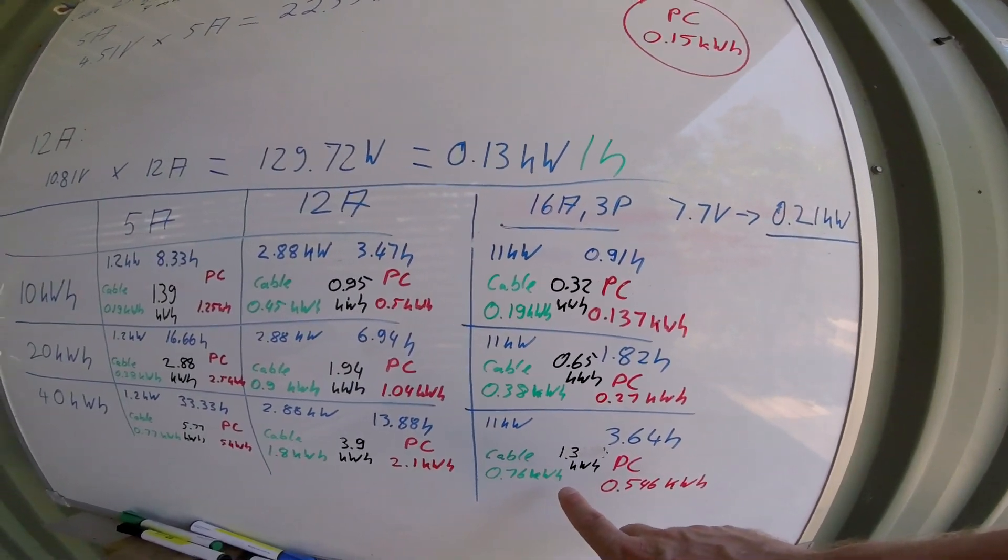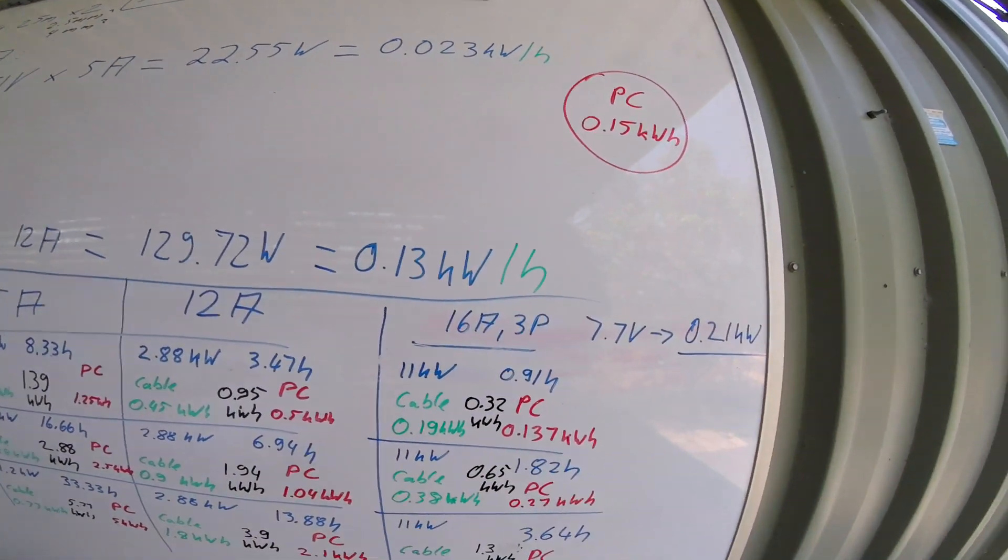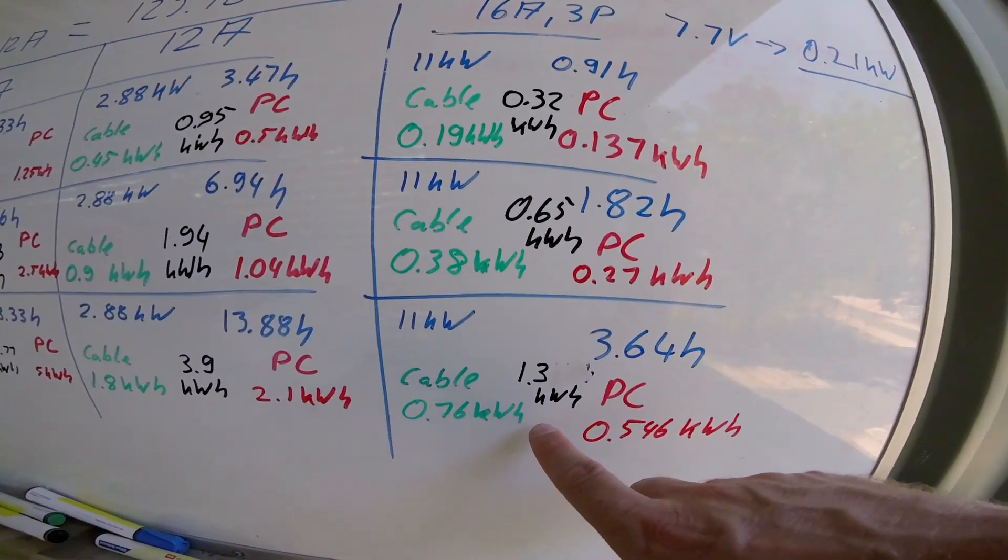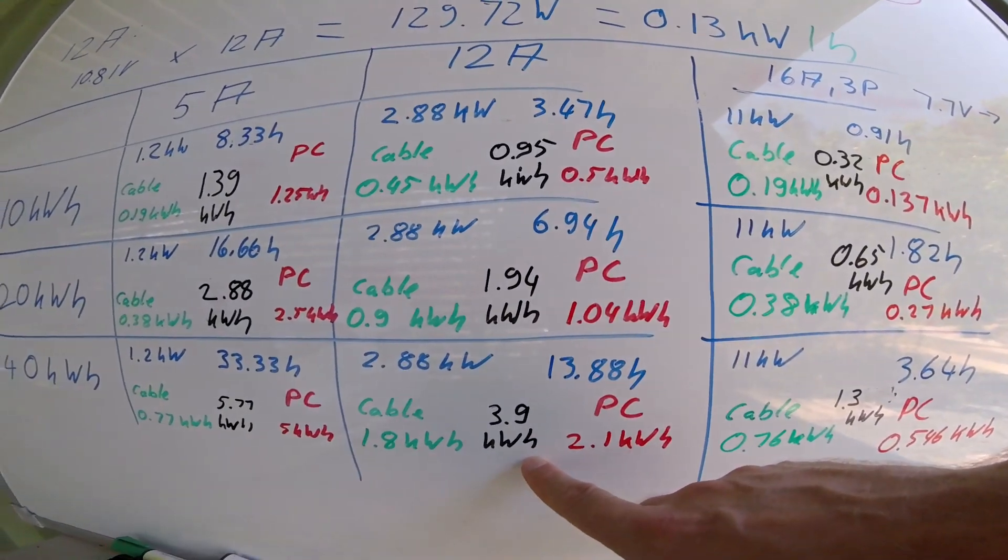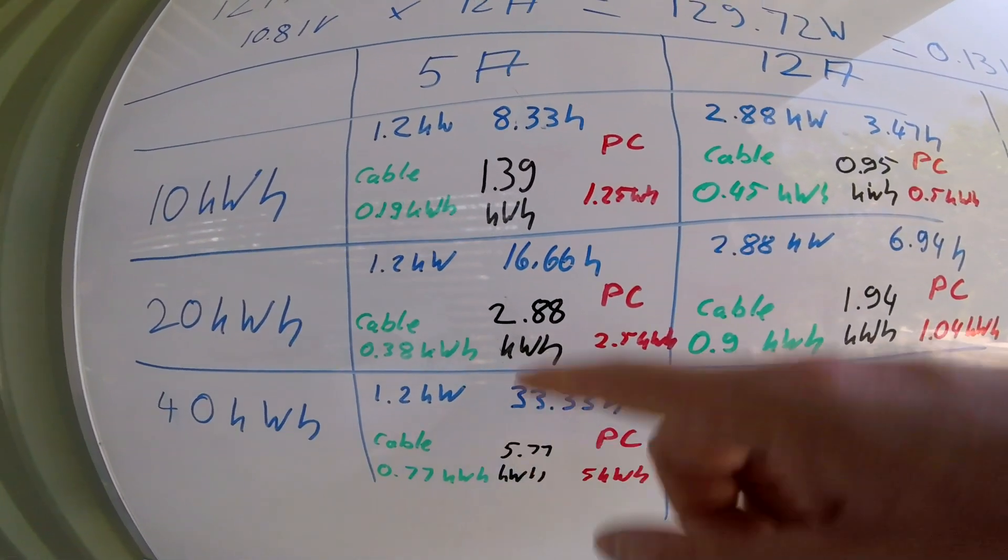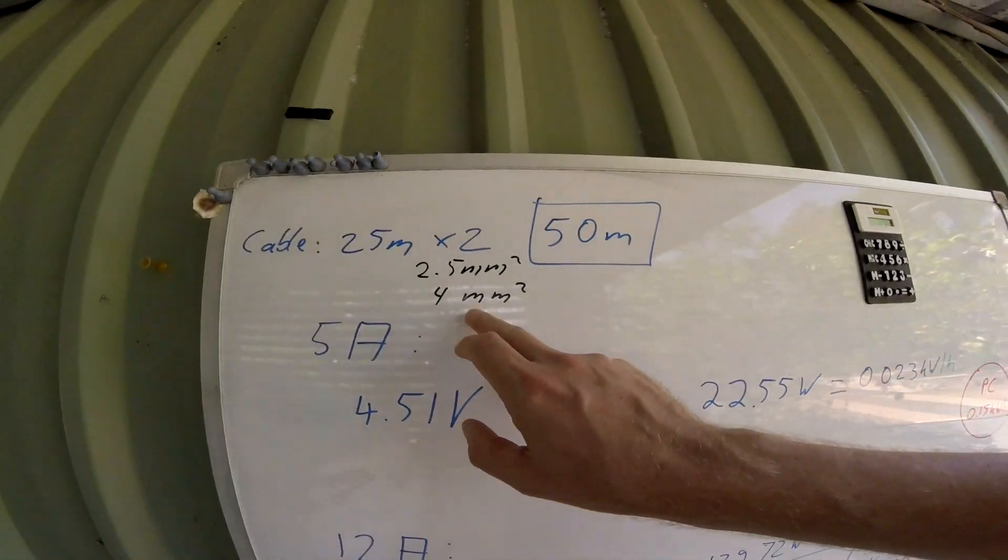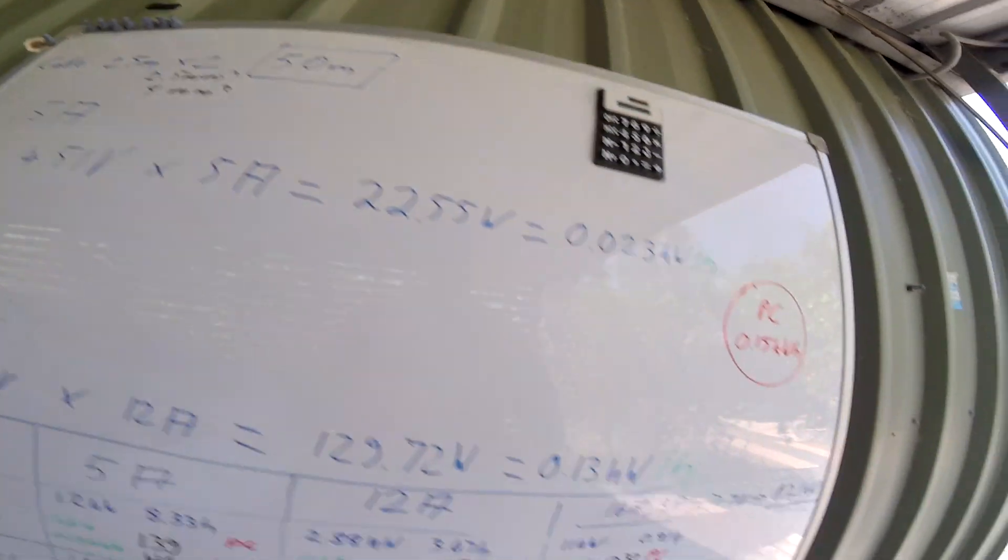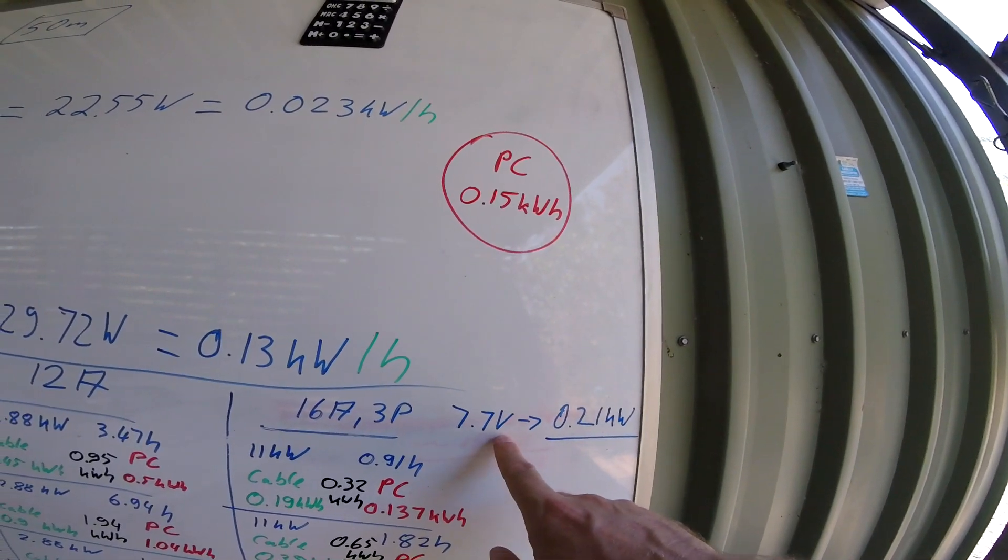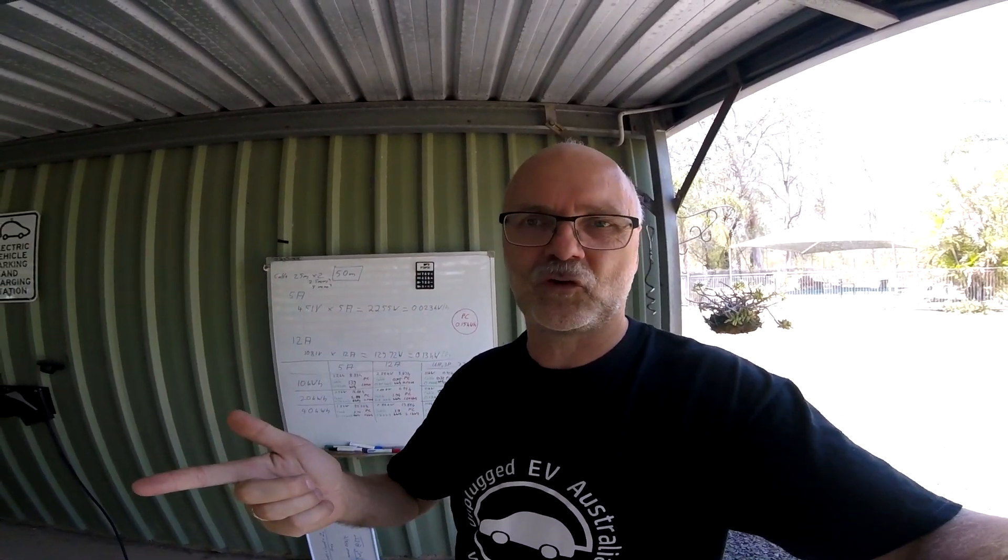So to charge 40 kilowatt hours with the wall charger coming with a car, it loses only 1.3 kilowatt hours. While on the 12 amp setting with the UMC, 3.9 kilowatt hours, and on the 5 amp settings 5.77 kilowatt hours. So you are losing a lot more on 5 amp than on 16 amp three phase. This is calculated with a 4 millimeter cable, 50 meter length, and 7.7 volt loss. So it looks like on AC, the faster you charge, the less losses you have in terms of the cables and internal computer. So charge fast at home.